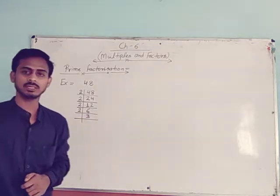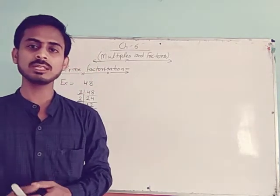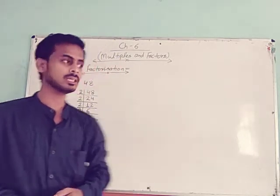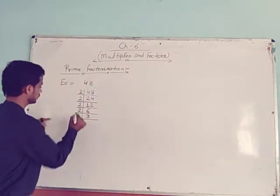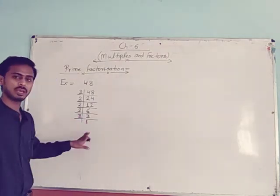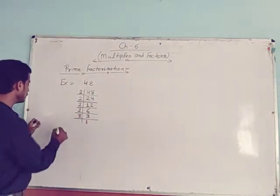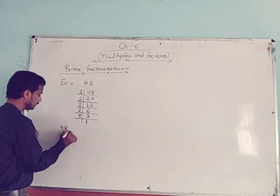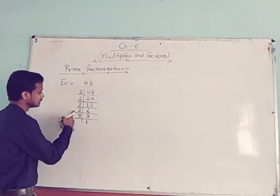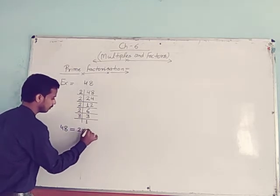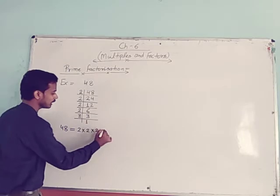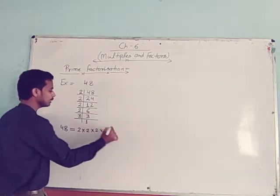Now we have 3. And you know 3 is not divisible by 2. So the next prime number is 3 itself. Divide 3 by 3 and we get 1. So we can write 48 as these factors: 2 × 2 × 2 × 2 × 3.